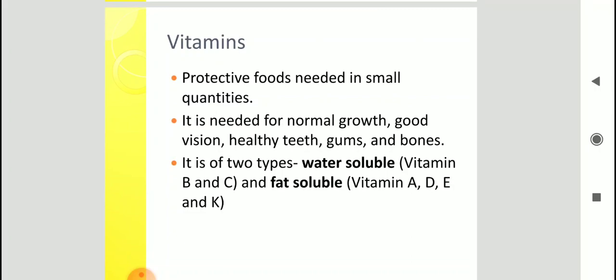Children, next component is vitamin. Now, they are the protective foods that are needed in very small quantity. They do not give us energy. They do not help in body building. But, for the normal functioning of body, for normal growth, for good vision, healthy teeth, gums, bones, for all these reasons, we need vitamins. Now, this is something that you already knew. So, what you are about to learn is that vitamins can also be categorized into two types. Some of them are soluble in water, while others are soluble in fat.